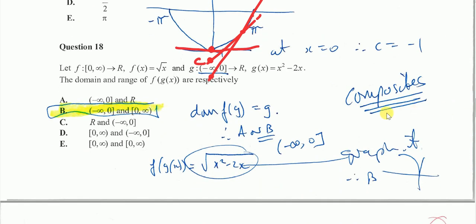And question number 18. The domain and range of this thing here. The rule for the domain of f(g) is the domain of g, and the domain of g is minus infinity to 0. So therefore, only A and B are possible answers, because they're the only ones that have a domain, which is the domain of g.